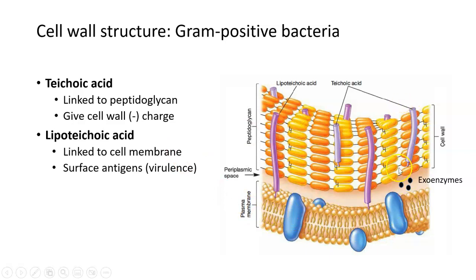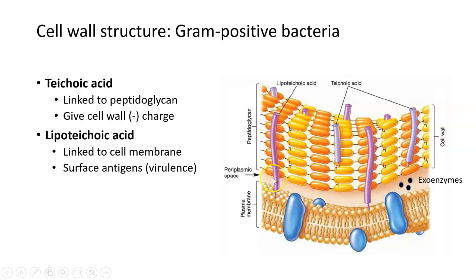There's the thick layer of peptidoglycan in orange and yellow. What you'll see is there are some small purple molecules called teichoic acids and other longer purple molecules called lipoteichoic acids — both with slightly different functions. Teichoic acids are linked to the peptidoglycan and extend outward into the environment, giving the cell wall an overall negative charge. Lipoteichoic acids, on the other hand, hold the peptidoglycan onto the cell membrane, maintaining that connection between the cell wall and the cell membrane. So the cell wall is not just floating — it's physically attached to the bacteria's membrane.